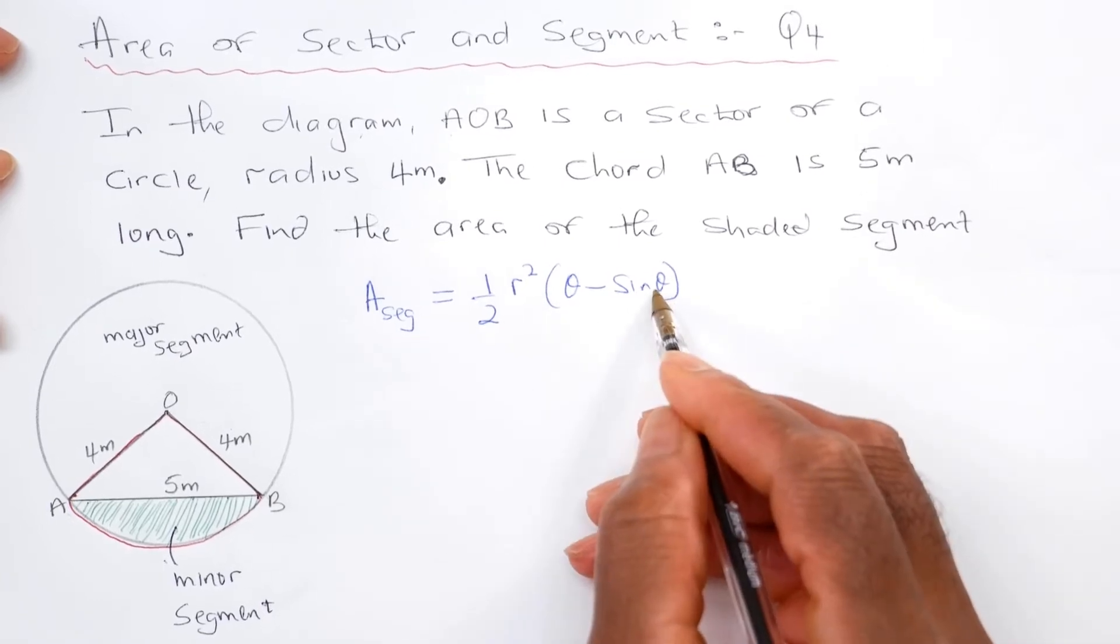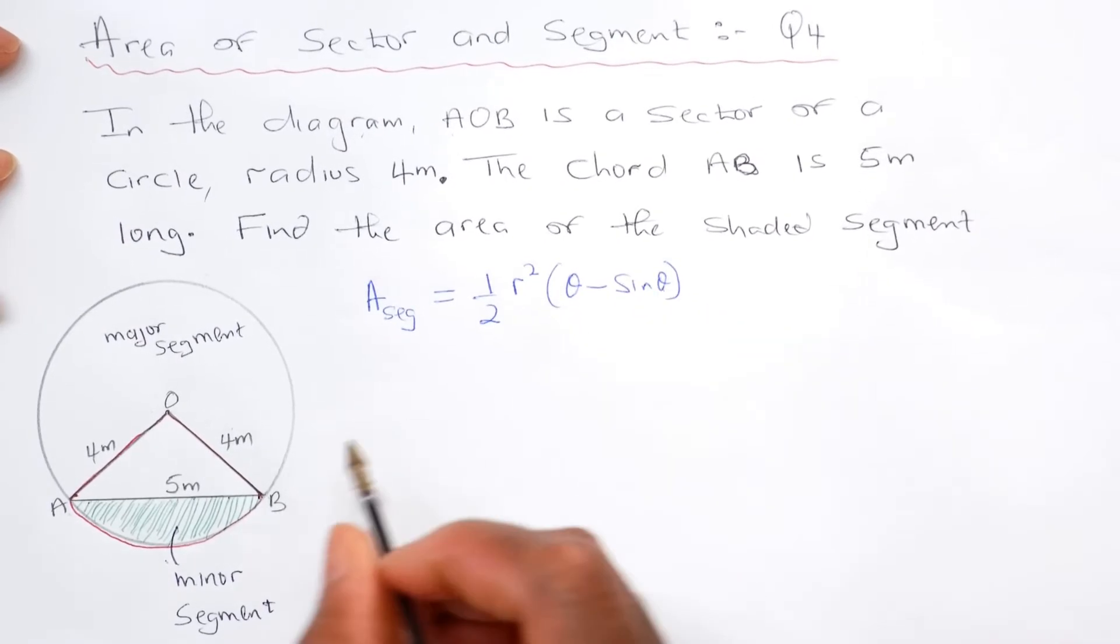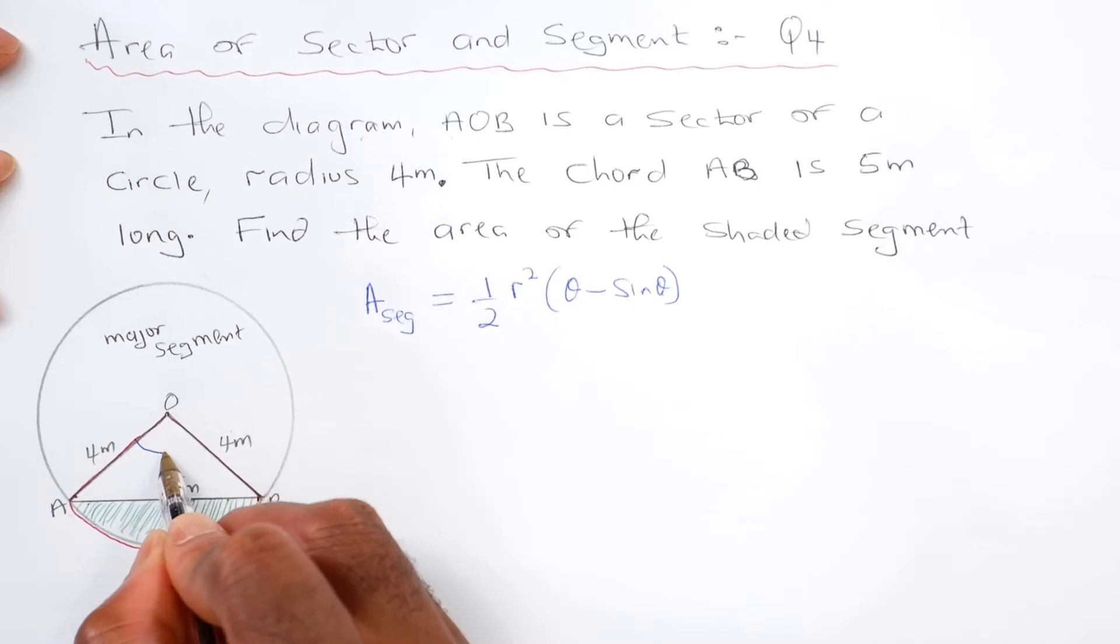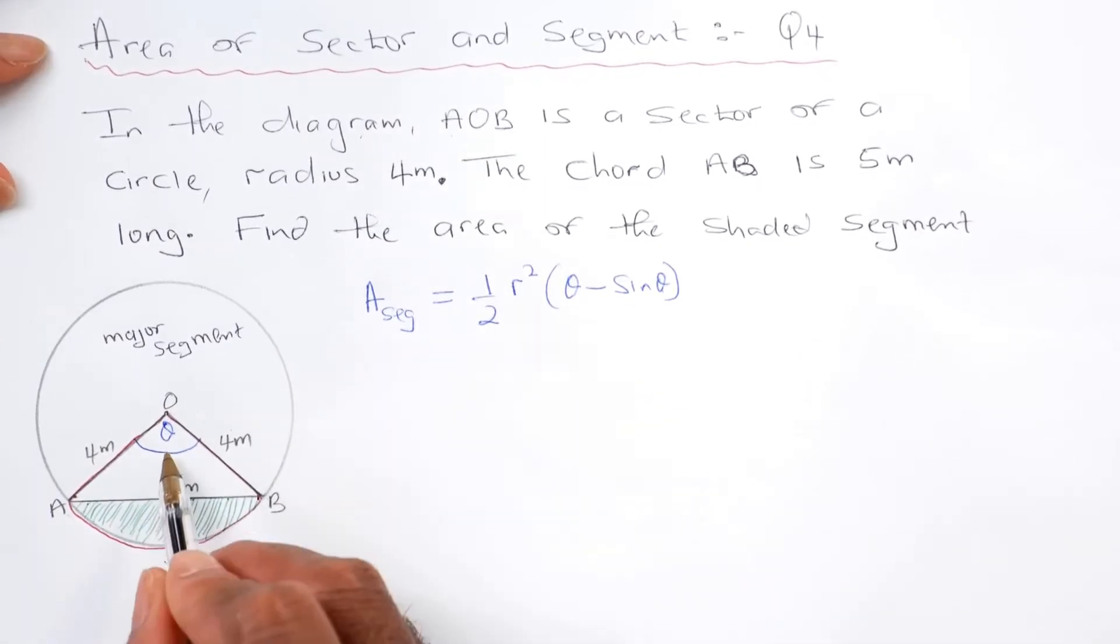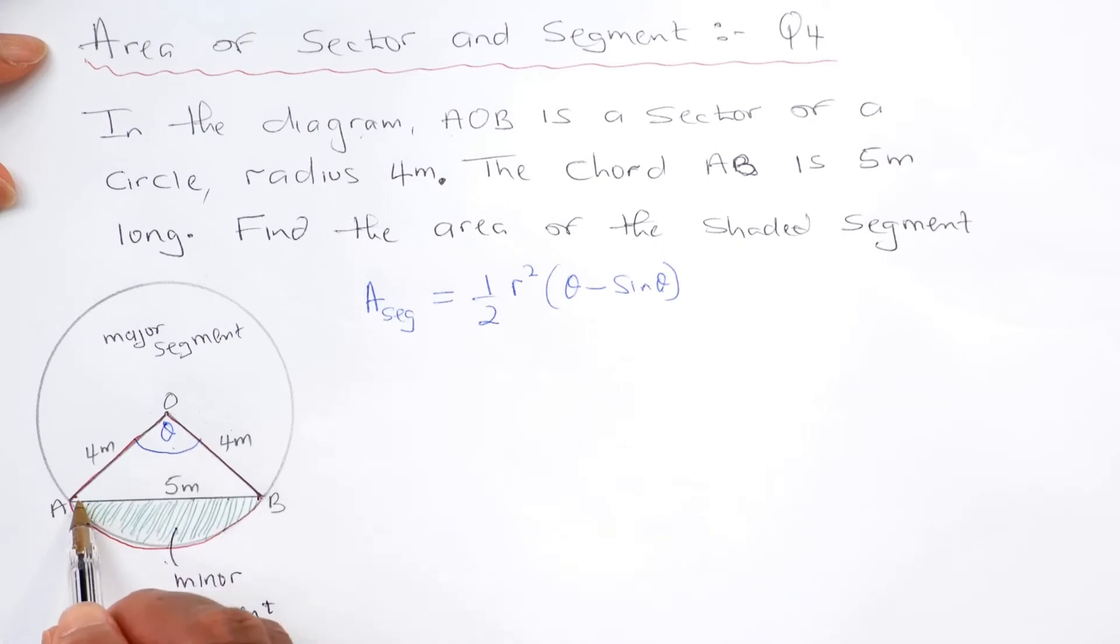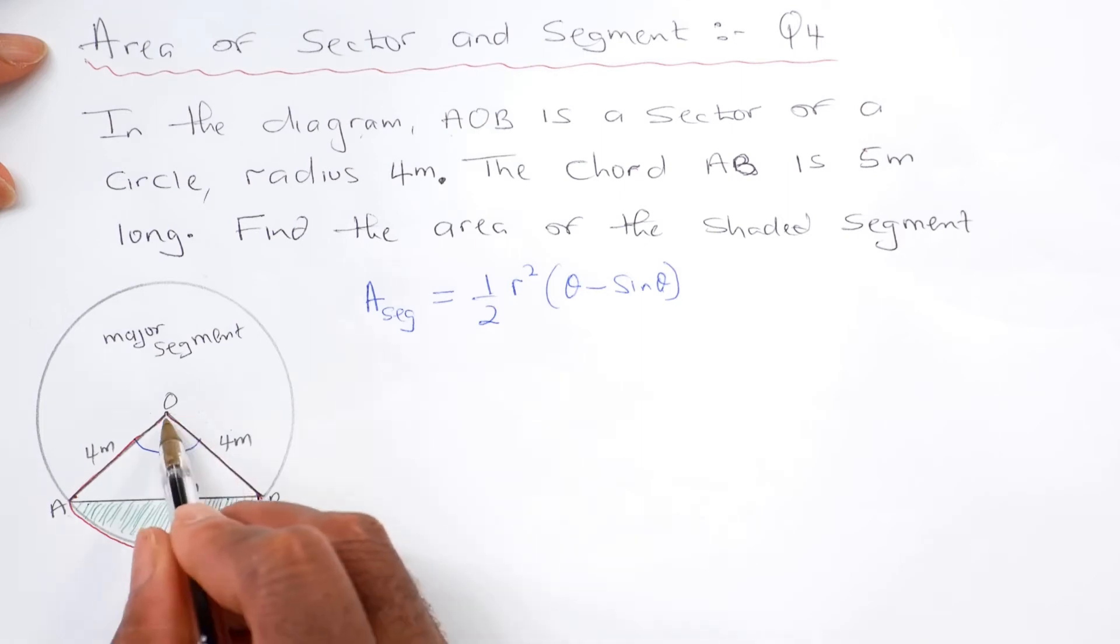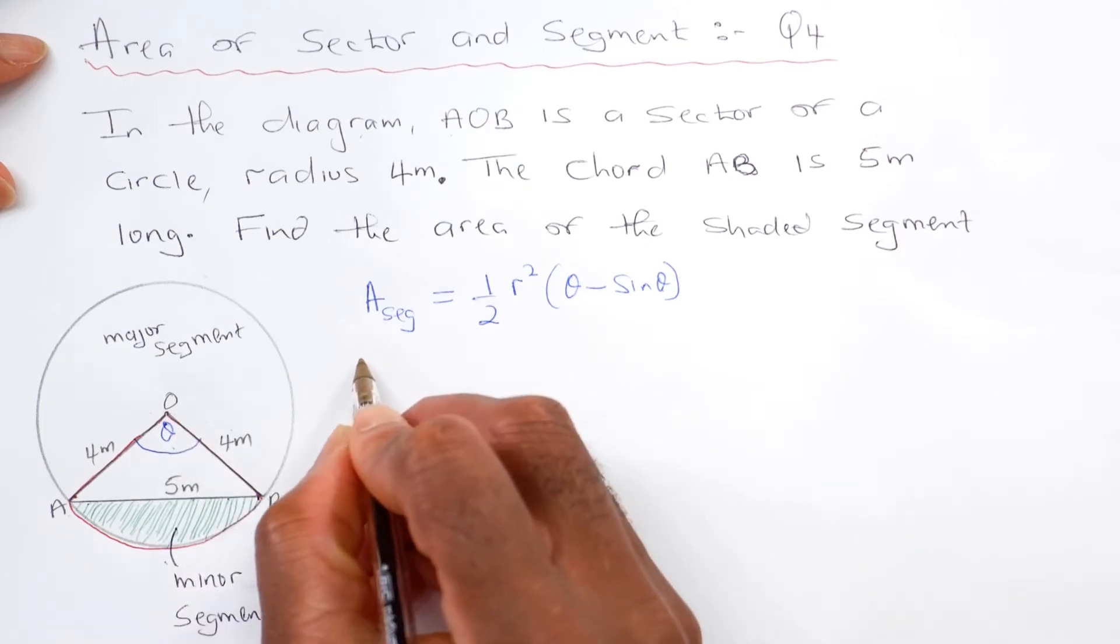Here theta is in radians, so the angle theta is this one. I can find the angle theta using cosine rule for that triangle.